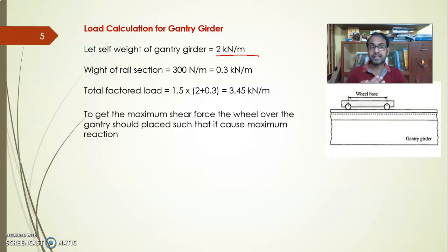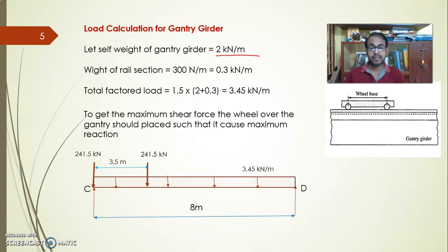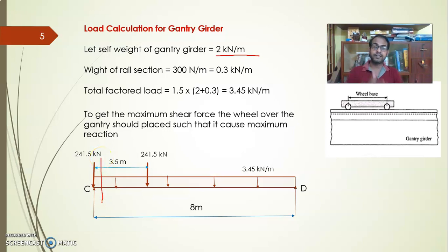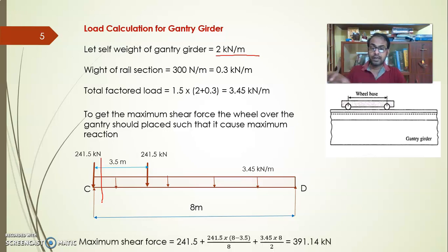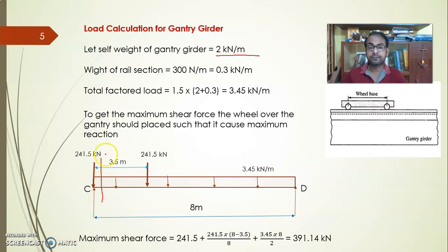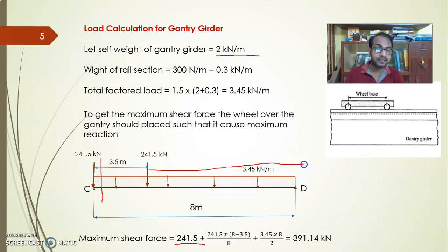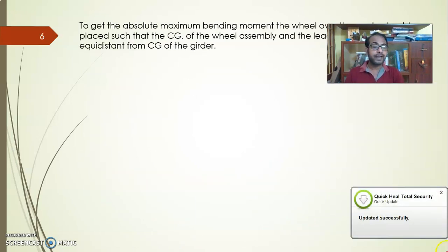To get the maximum shear force, the wheel loads are placed so that one wheel is just over the support and the other is at 3.5 m (the wheelbase distance). The reaction of 241.5 kN is transferred directly to the support, and for the second wheel W·b/L applies over the distance (8 − 3.5) m. Adding the UDL contribution (ω·L/2), the maximum shear force is 391.14 kN.